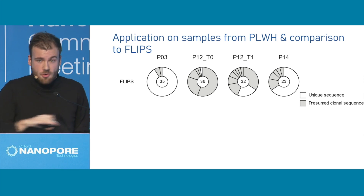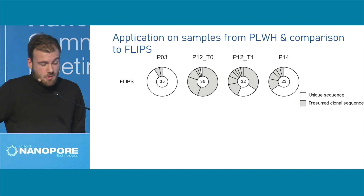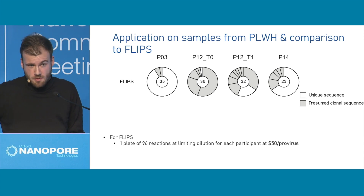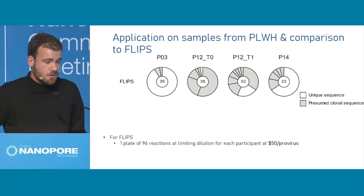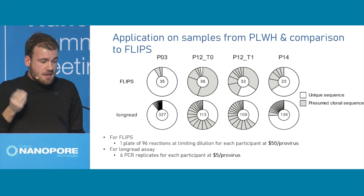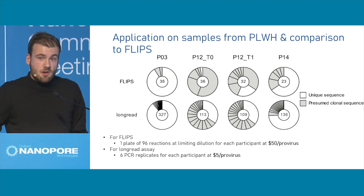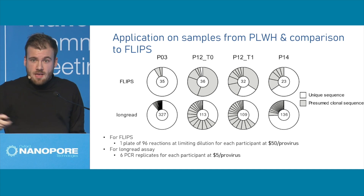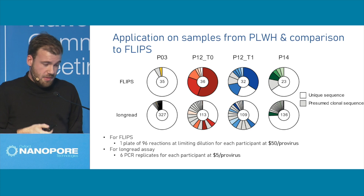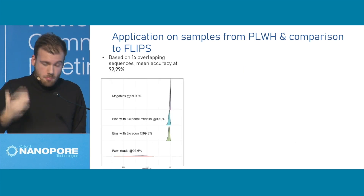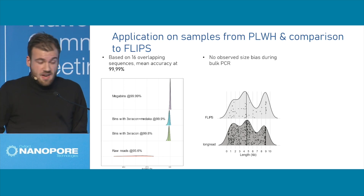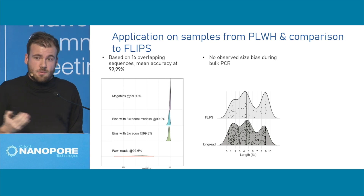For benchmarking: using the normal method, we took DNA and a 96-well plate that gave us around 30 positive samples and sequenced them. In white, we have unique sequences, and in gray, sequences observed multiple times, because HIV can also be clonal. This is a huge cost — $50 per provirus. Using our new technology with six PCR replicates, you get a lot more HIV viruses. We can also look for overlaps because HIV is clonal. Comparing the nanopore proviruses with the Illumina proviruses, due to the mega-binning we get up to 99.90% accuracy, which is really nice.